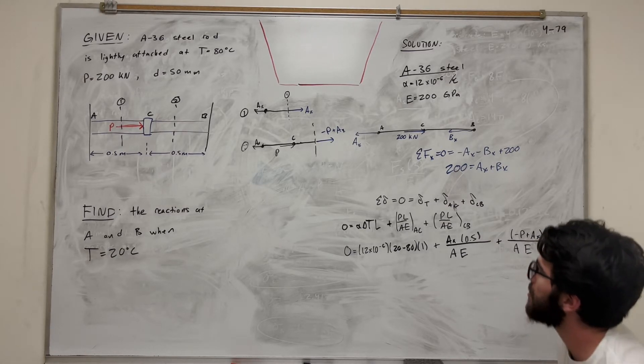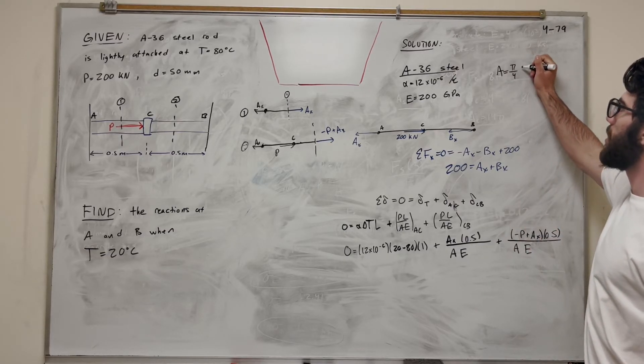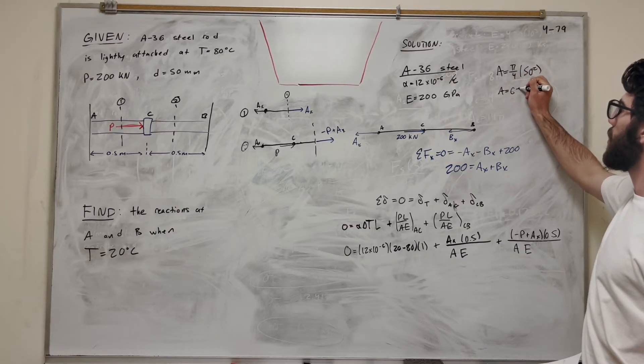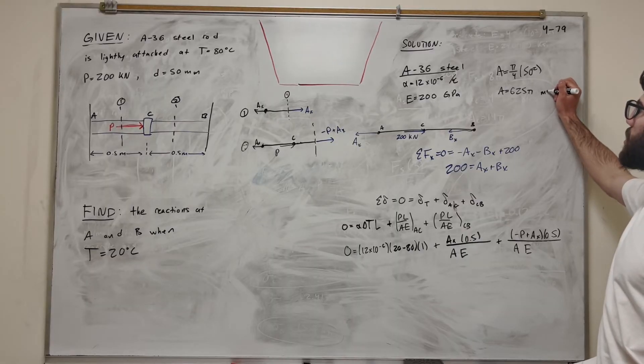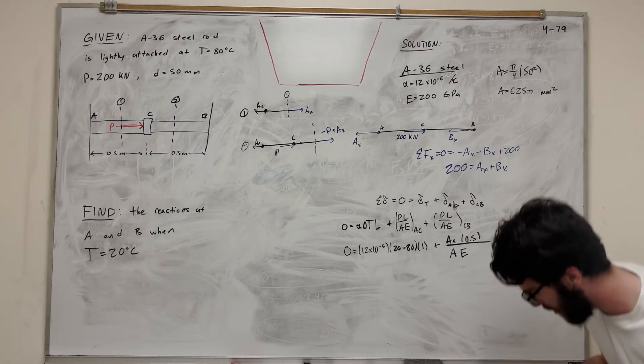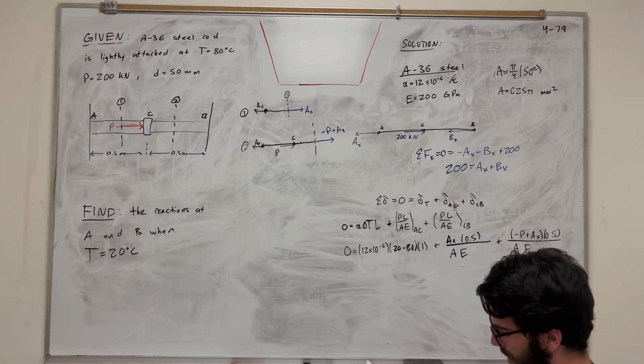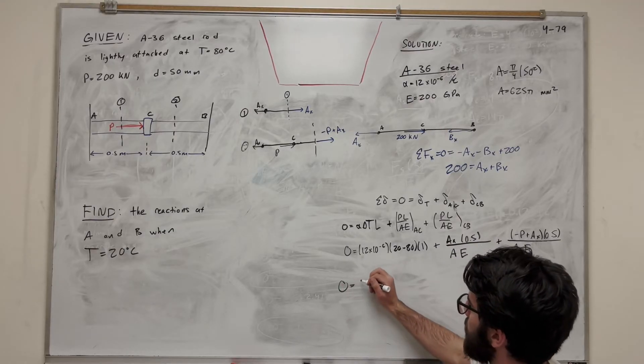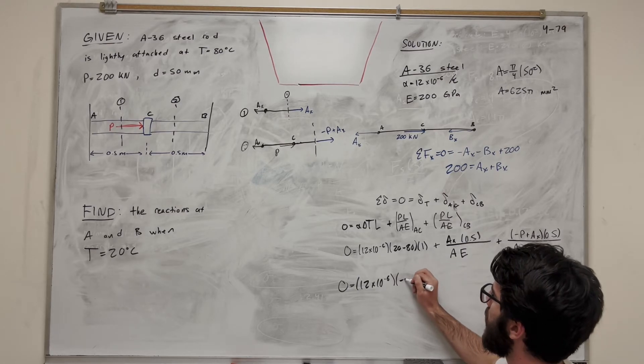So area is equal to pi over 4 diameter squared, which is 50 squared. You get 625 pi millimeters squared. Okay, perfect. So now we have everything to E. So let's just keep plugging the numbers. So did I do the parenthesis? No, I did not. But yeah, let's bring that down. 12 times 10 to negative 6. Negative 6. Plus.